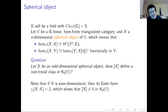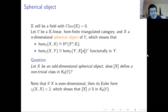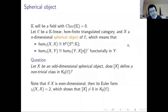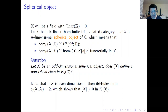The question is whether any odd-dimensional spherical object defines a non-trivial class in the Grothendieck group of the triangulated category. If x is an even-dimensional spherical object, the Euler form shows it defines a non-zero class in the Grothendieck group. But if it is odd-dimensional, one cannot derive this from the Euler form.